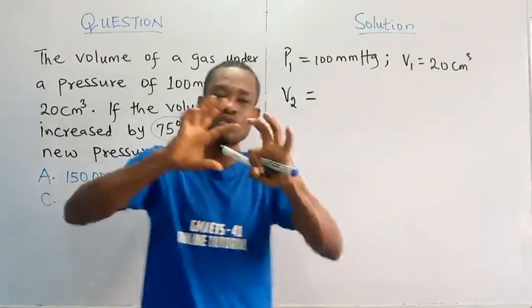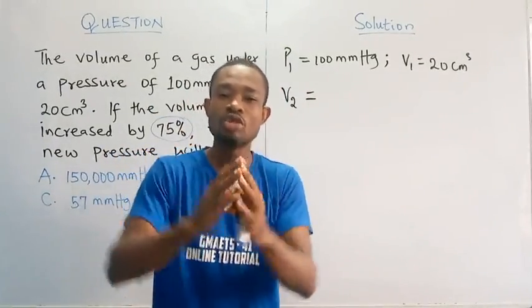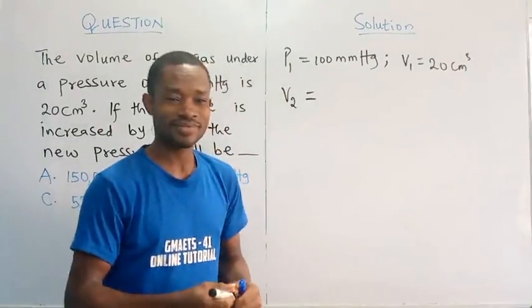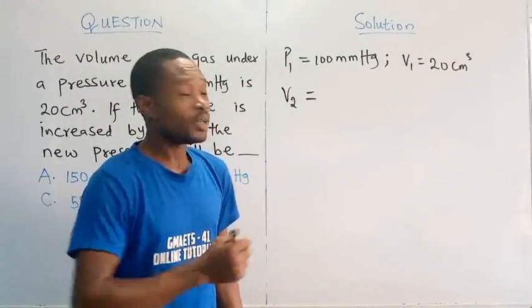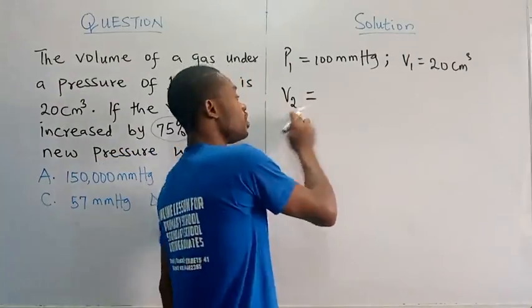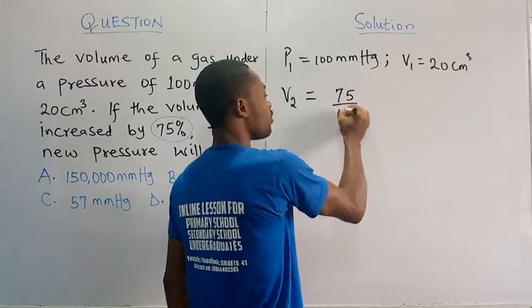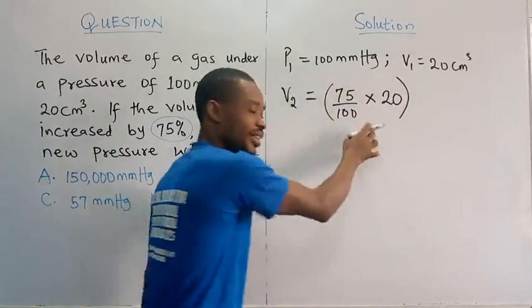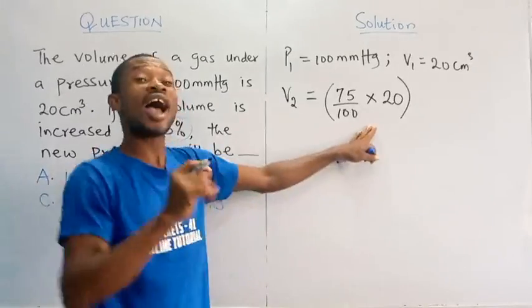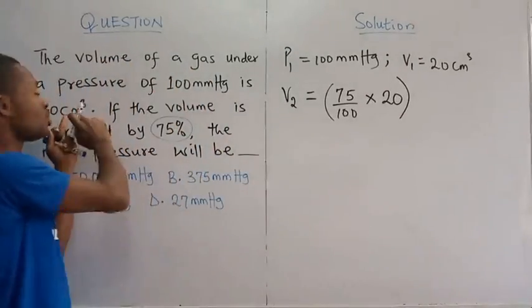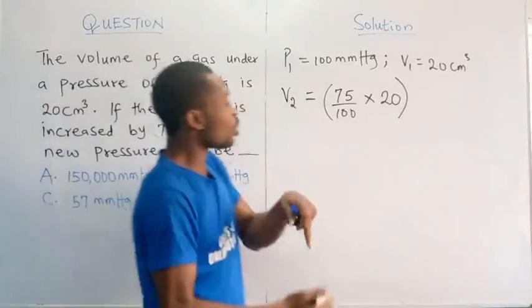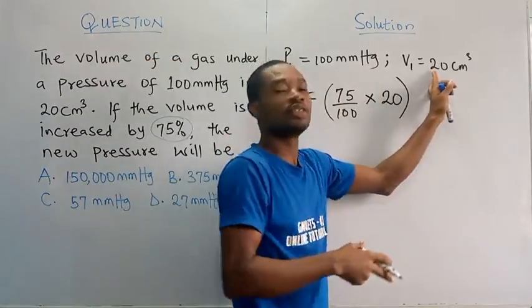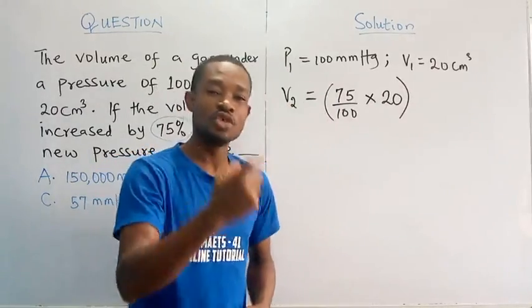The same thing we apply here, 75% of 20, we would know the actual value, the actual volume, the actual amount that was added to this initial volume to increase it. So in summing this, we would say that V2 will be 75%, which is 75 over 100, we are going to multiply by 20. Anything we get from here will be the actual volume that was added to this 20 cubic cm to increase it. So if I know that actual value, I will now have to add it to this 20 to actually get the new volume.